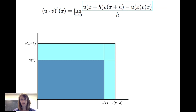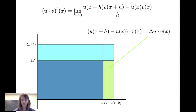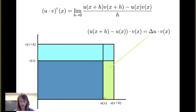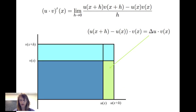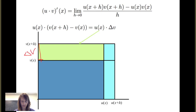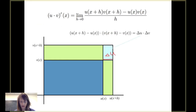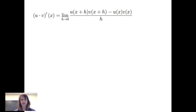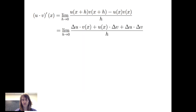Now this region can be broken into three different pieces. That first piece has dimensions delta u by v of x. The second piece has dimensions delta v by u of x. That third piece has dimensions delta u by delta v. So when I consider the limit as h goes to 0 of u of x plus h times v of x plus h minus u of x times v of x, all over h, I can write that numerator in three pieces: delta u times v of x plus u of x times delta v plus delta u times delta v, all over h. And we want the limit as h goes to 0.